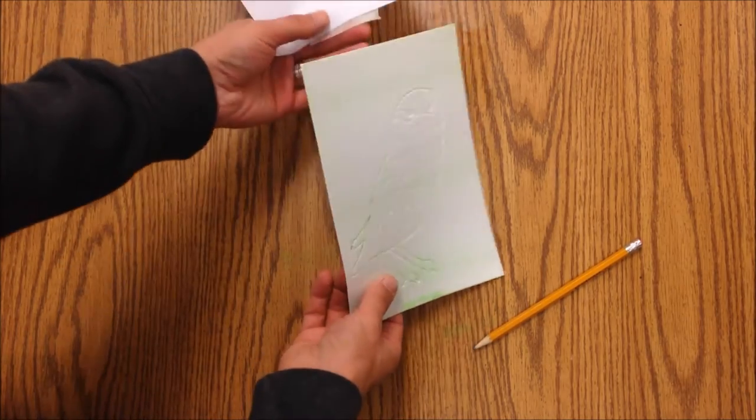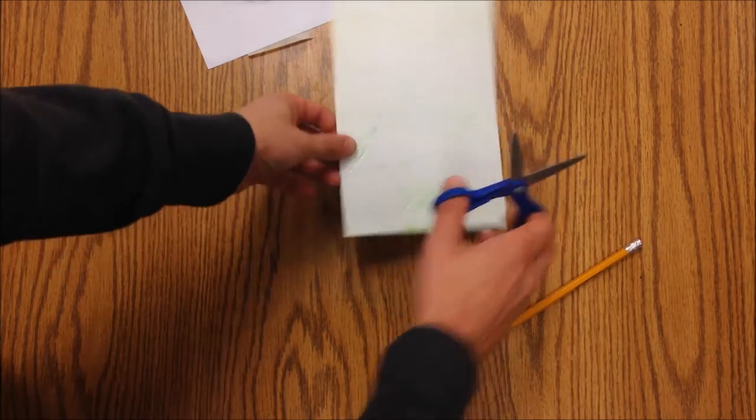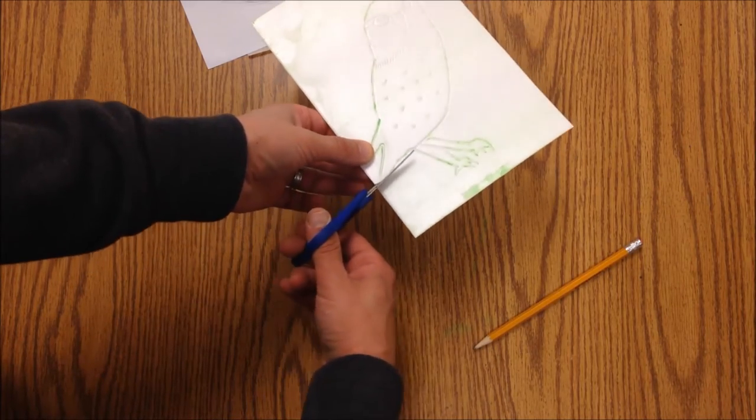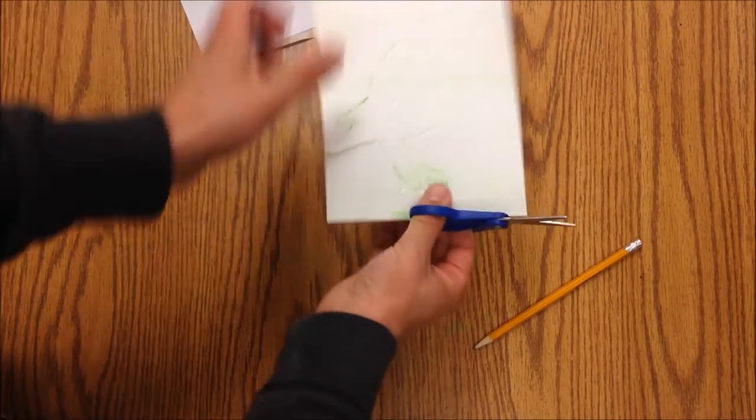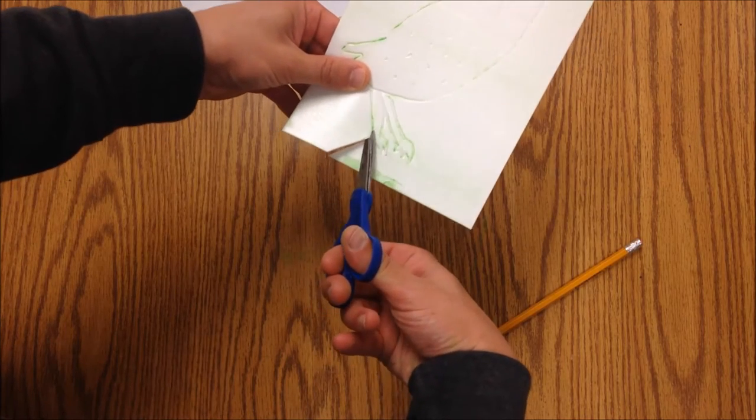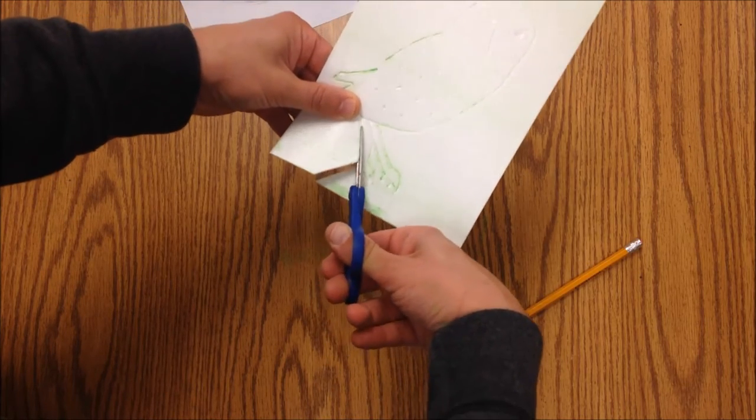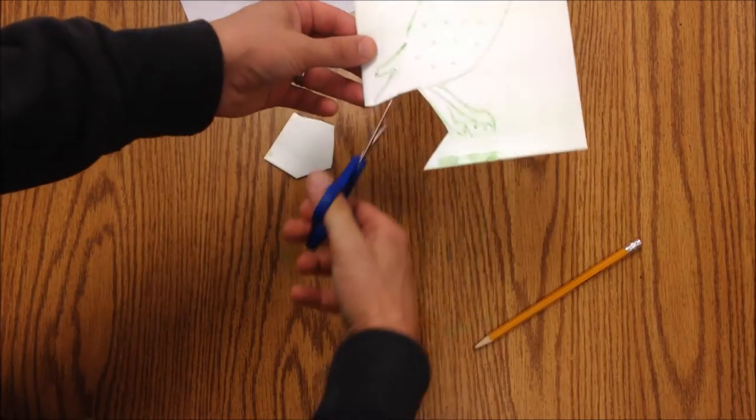And this is a reduction print. So now we need to cut the rest of it off, because we're only going to print this inside of this owl on top of that green that I printed last time.